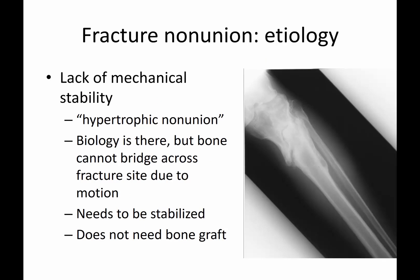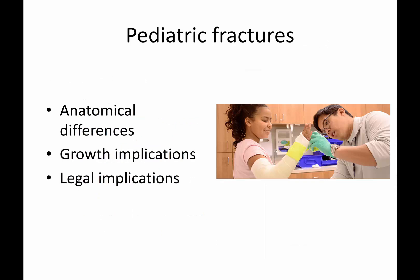This is just showing another example of a hypertrophic non-union — bone is present but can't bridge across. Here you can see a lot of bone trying to form laterally, coming from either direction, but it will not completely bridge the gap. Again, this needs to be stabilized and does not need bone graft.